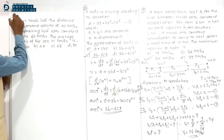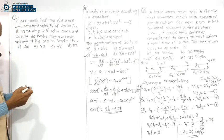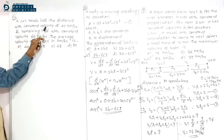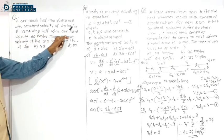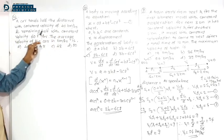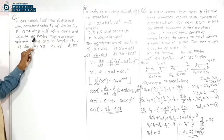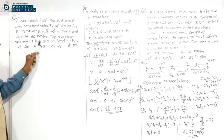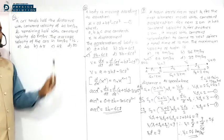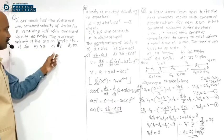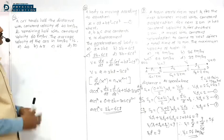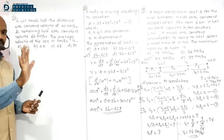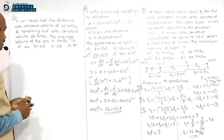Next, numerical 11: A car travels half the distance with constant velocity of 40 km/hr and the remaining half with constant velocity of 60 km/hr. The average velocity of the car in km/hr is? The answer unit is km/hr, so no unit conversion needed.